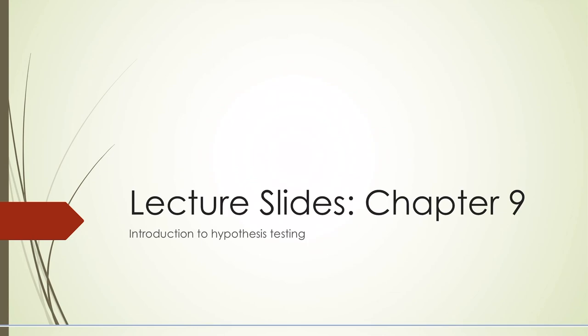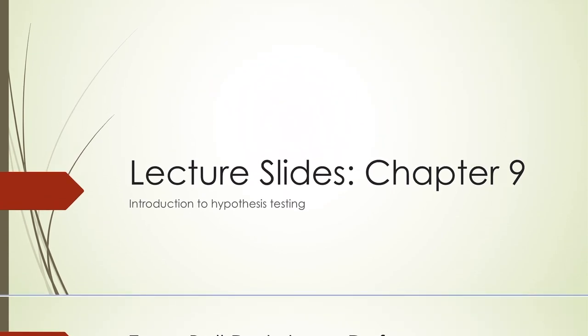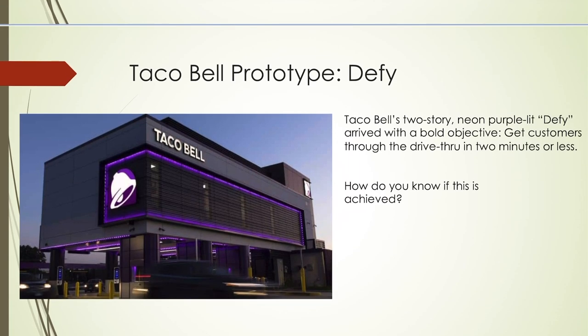Hello everyone. Today we're going to be talking about hypothesis testing, beginning chapter 9. These are the only slides for chapter 9. First, Taco Bell has a prototype called Defy, from 2002, in Minnesota. Taco Bell's two-story neon purple lit Defy arrived with a bold objective: to get customers through the drive-thru in two minutes or less. The question is, how do you know if this is achieved? You take samples of wait times and service times. But how can you be confident that wasn't just a fluke, and that the actual service time is less than two minutes?